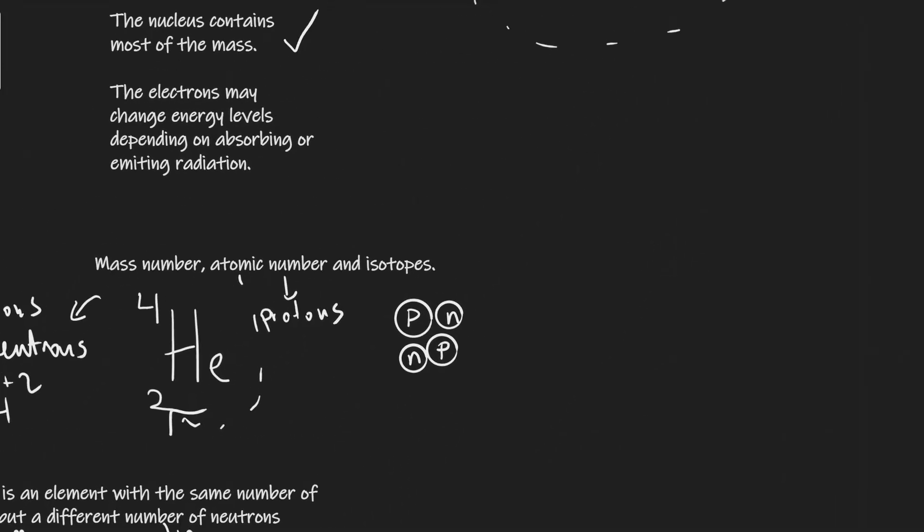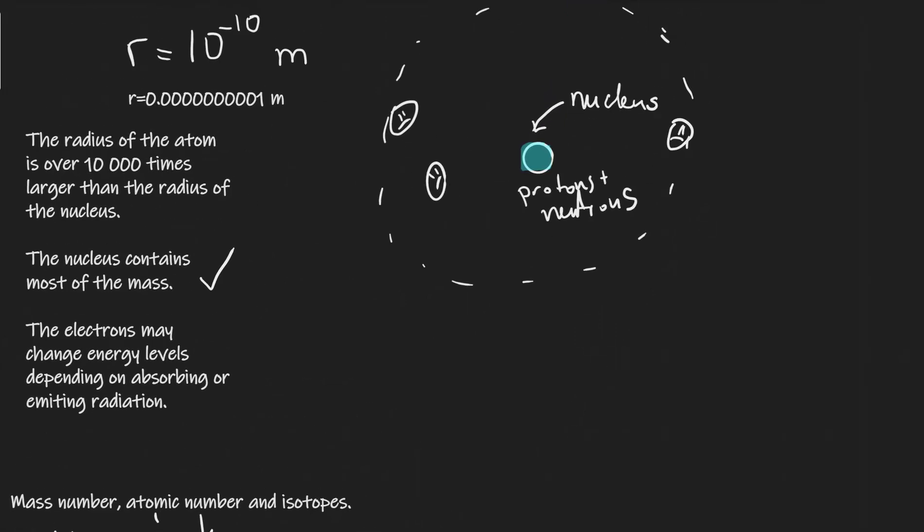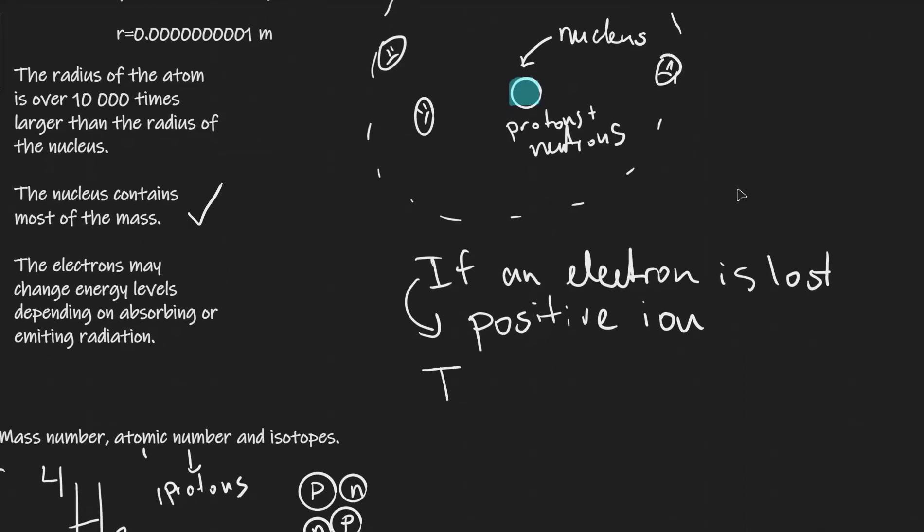Now it's also important to note that atoms can gain or lose electrons. So if an atom loses an electron, what we actually get is a positive ion.